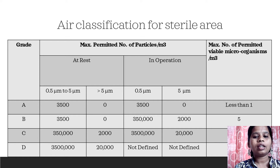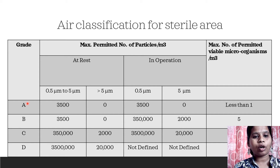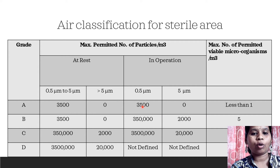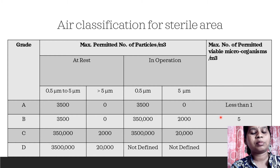Here we are going to see how many particles of what size are permitted in a particular area. For Grade A, which is considered for manufacturing of sterile products, particles ranging between 0.5 to 5 micrometers are permitted up to a count of 3500, and this same number is to be maintained in operation as well. More than 5 micrometer particles are not permitted at all. If the number of particles obtained in an area is less, then the maximum number of permitted viable microorganisms is also considered less.